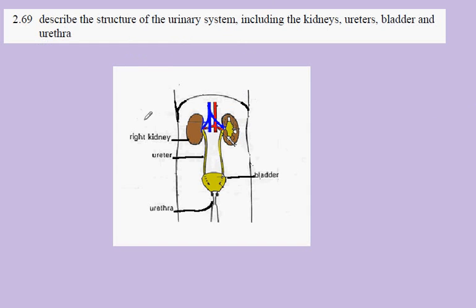In the urinary system, we have two kidneys. Here I've drawn the right kidney, and over here we would have the left kidney. Each with its own separate blood supply, carrying out the process of excretion and filtration, osmoregulation.